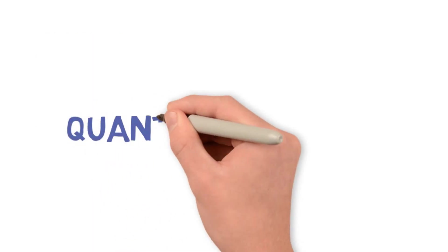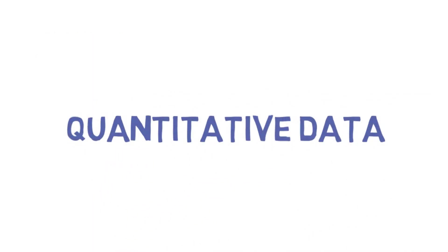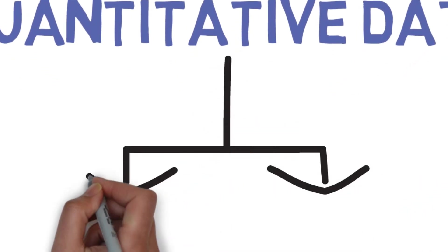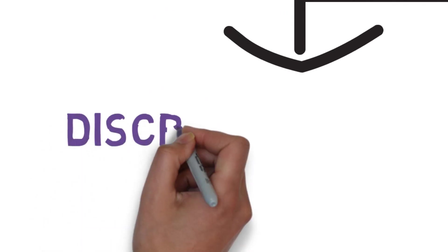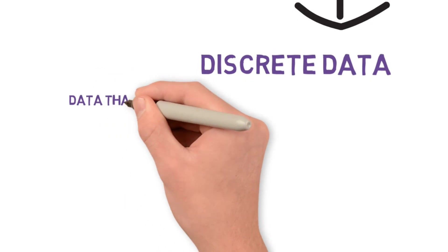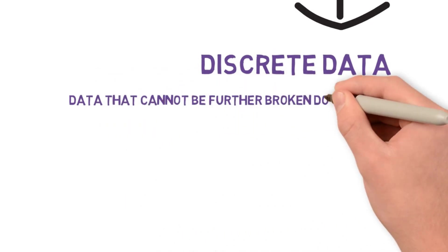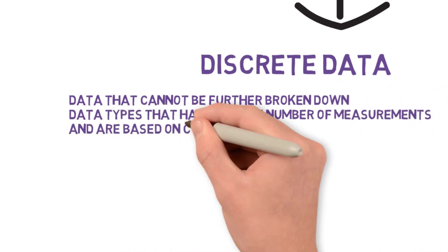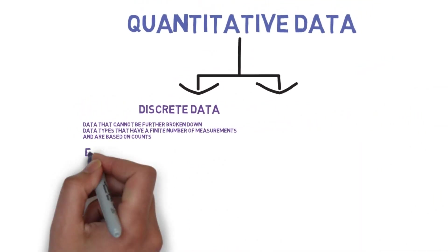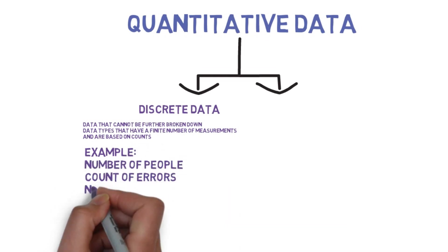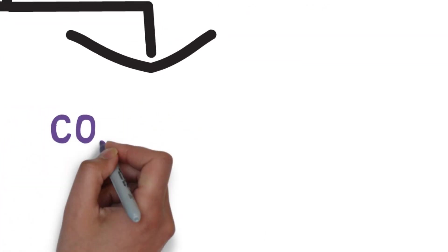The quantitative data can be divided into two types: discrete data and continuous data. Let's look at the first one, which is discrete data. Discrete data is data that cannot be further broken down, or data that have a finite number of measurements. These are based on counts. For example, number of people, count of errors, number of defects, yes or no.